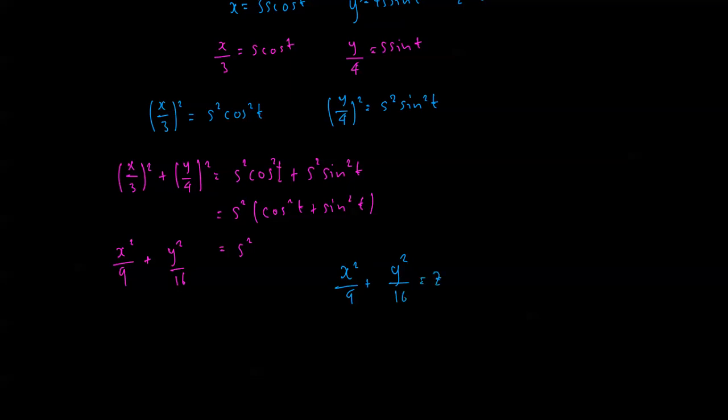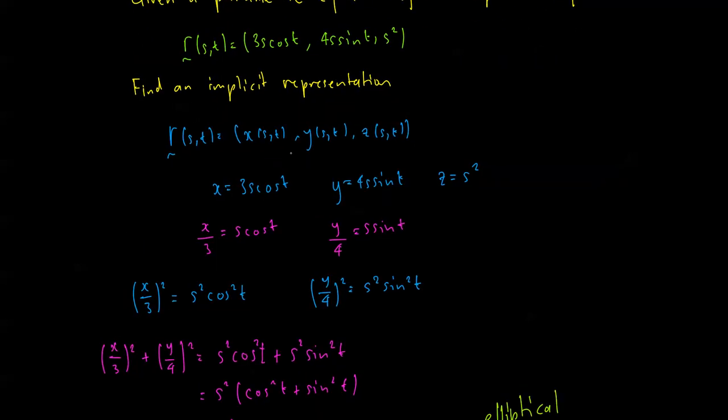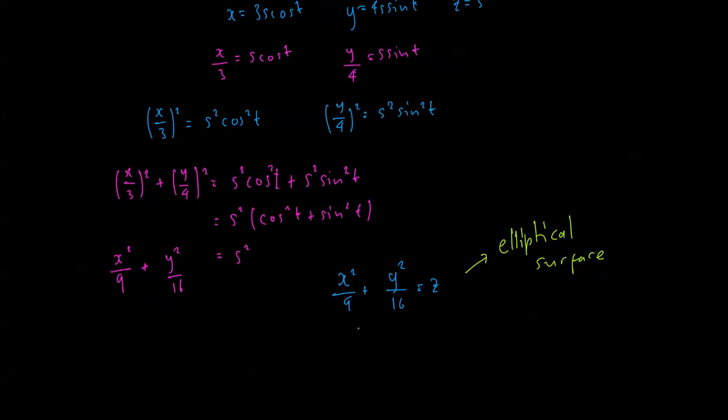Fortunately, that is the equation of an elliptical surface. That is how we find the implicit representation from the parametric representation, manipulating x and y such that they become a function of z.